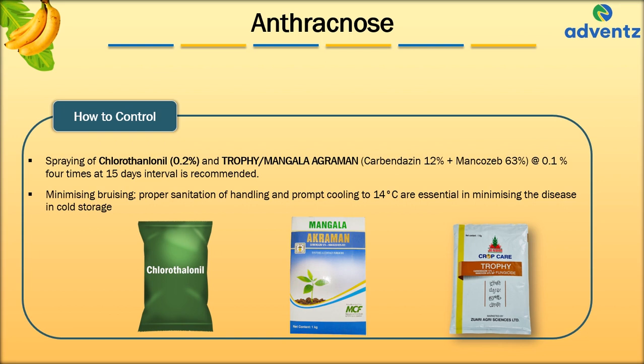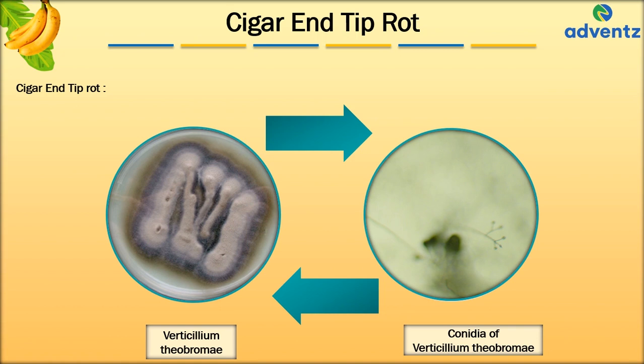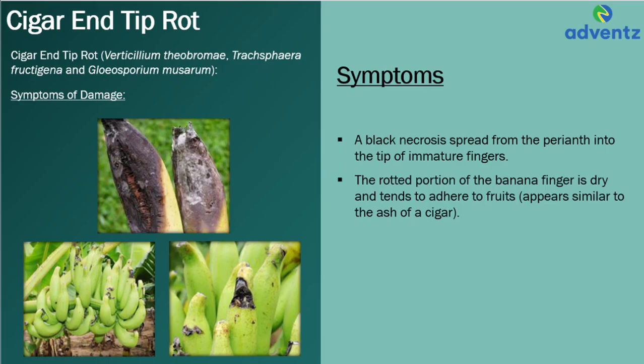As seen in the images, Cigar End-Tip Rot is in two phases: Verticillium theobromae and conidia of Verticillium theobromae. Cigar End-Tip Rot is also known as Verticillium theobromae, Trachysphaera fructigena, and Gloesporium musae. The symptoms are a black necrosis spreading from the perianth at the tip of the immature fingers. The rotten portion of the banana finger rises up and tends to adhere to the fruit, similar to the ash of a cigar.